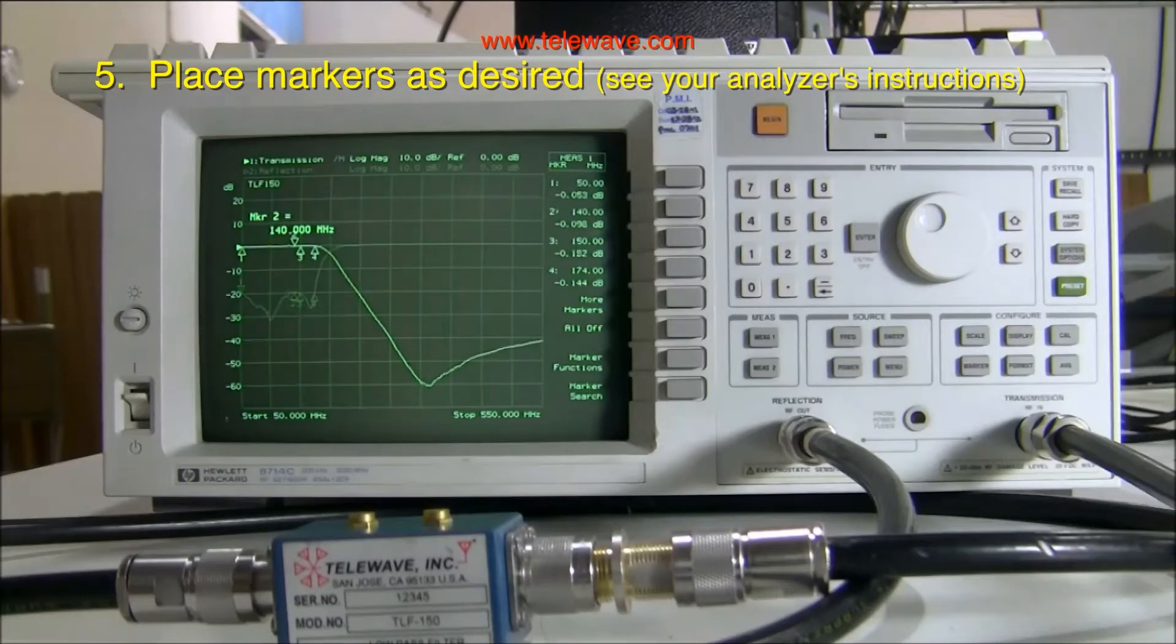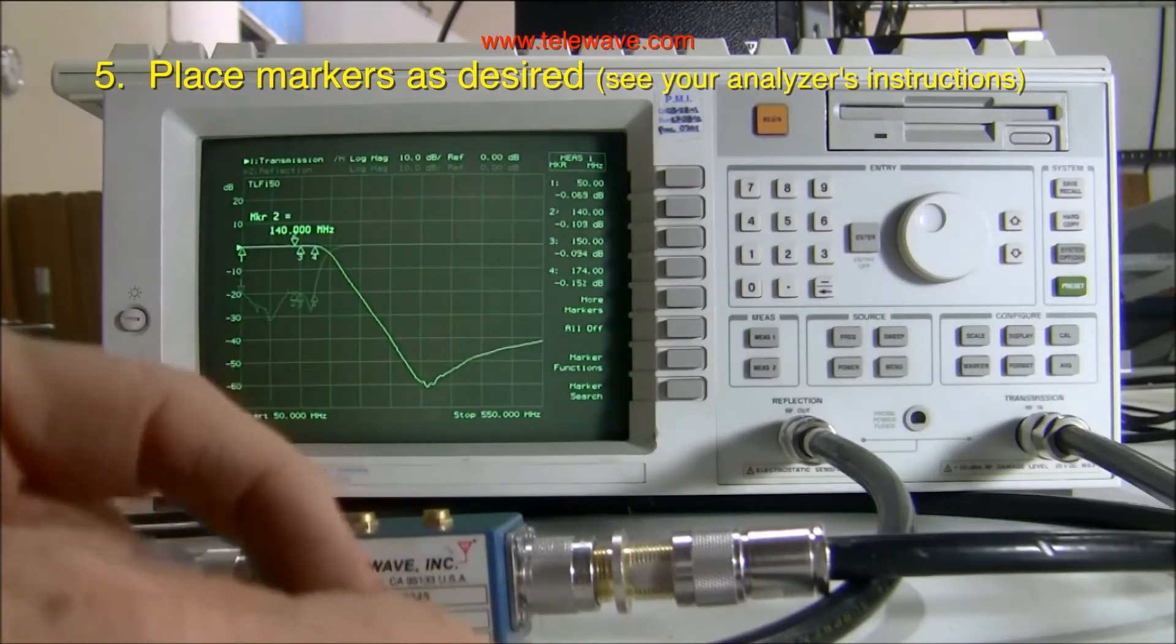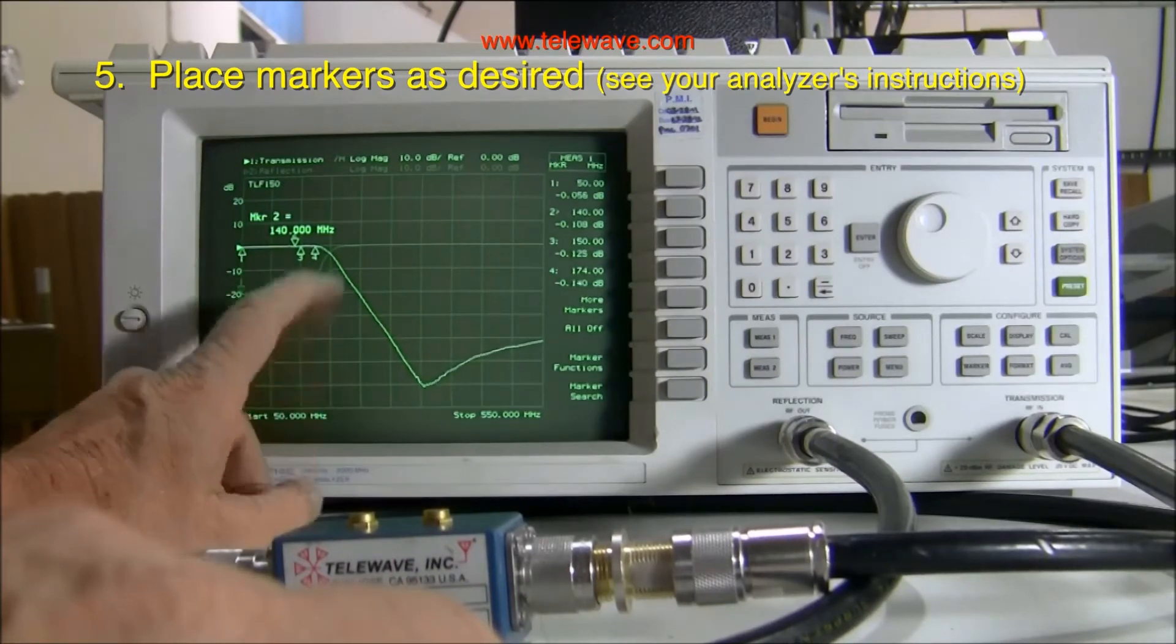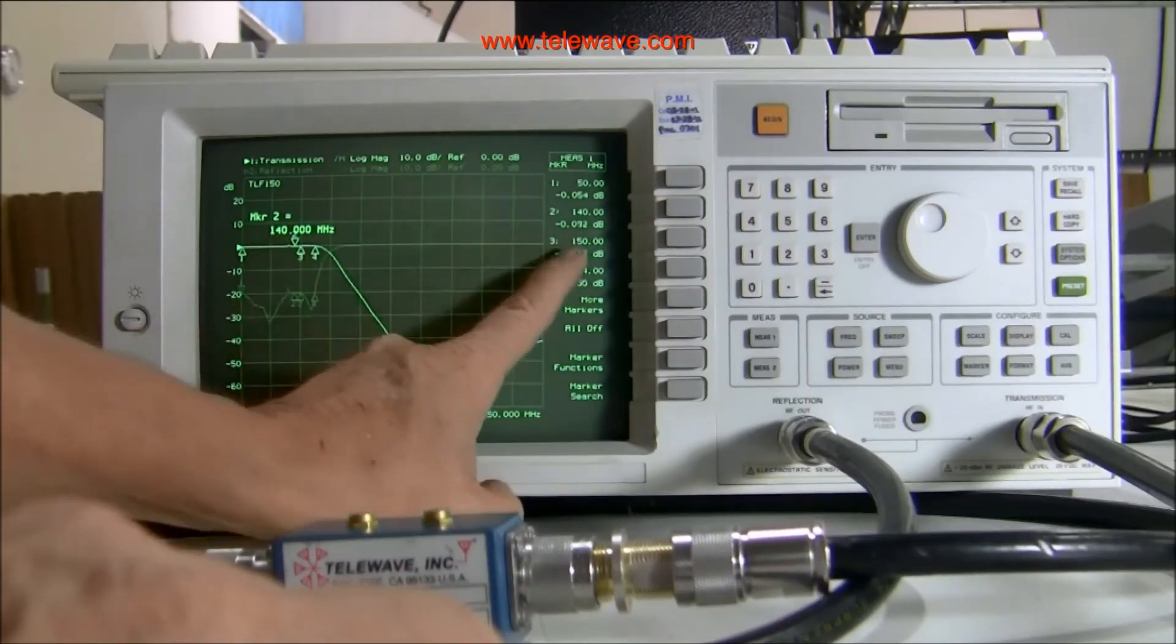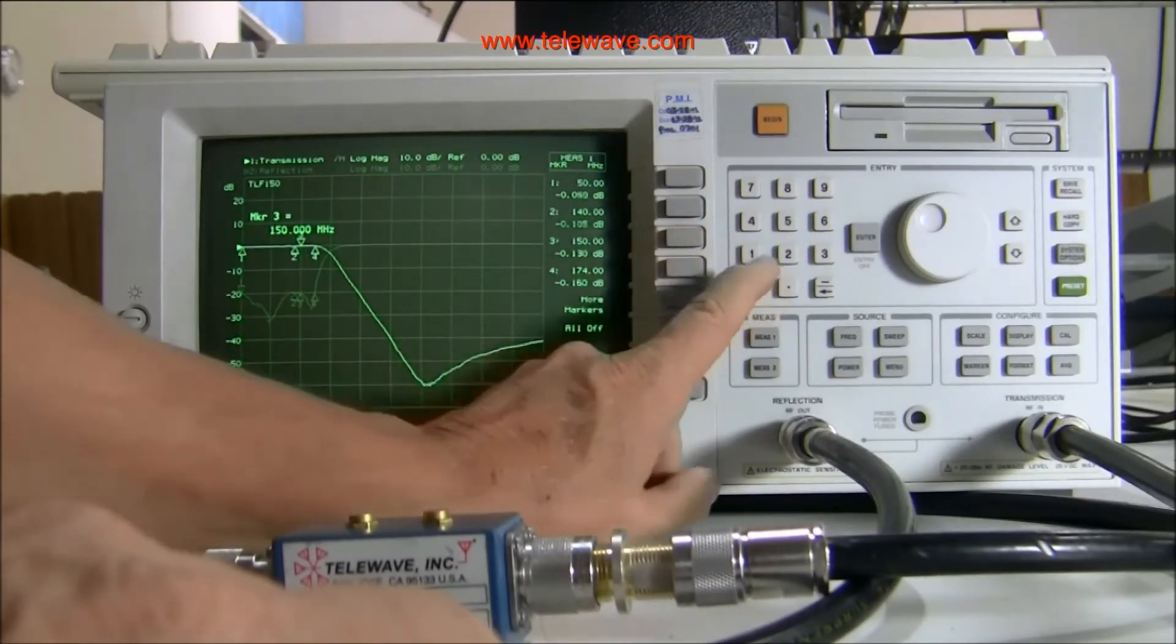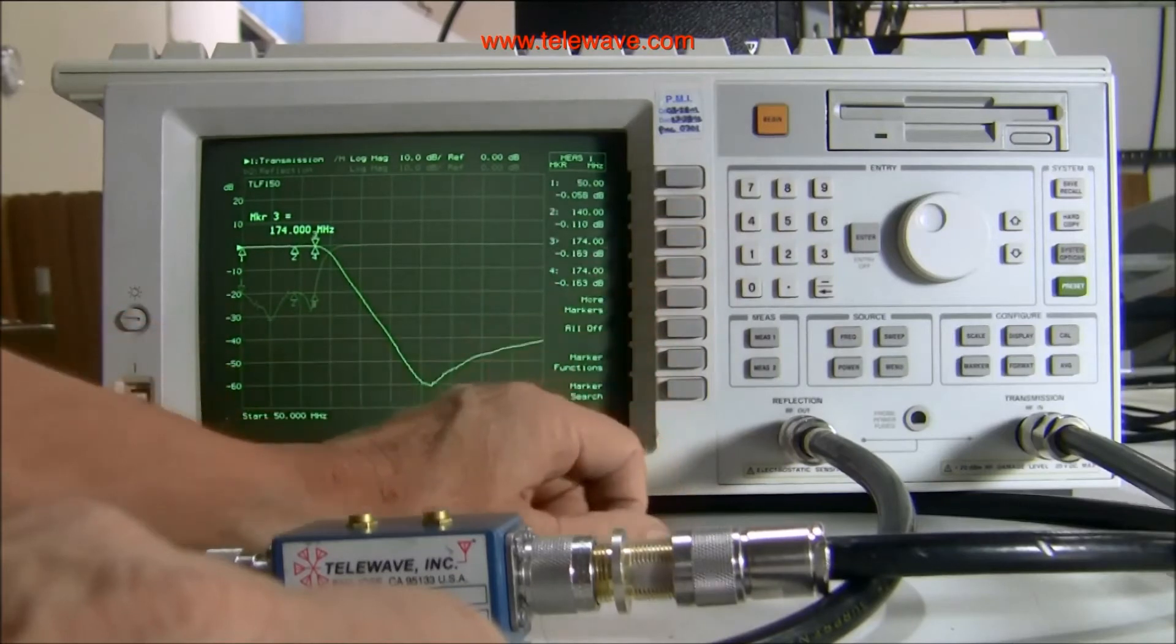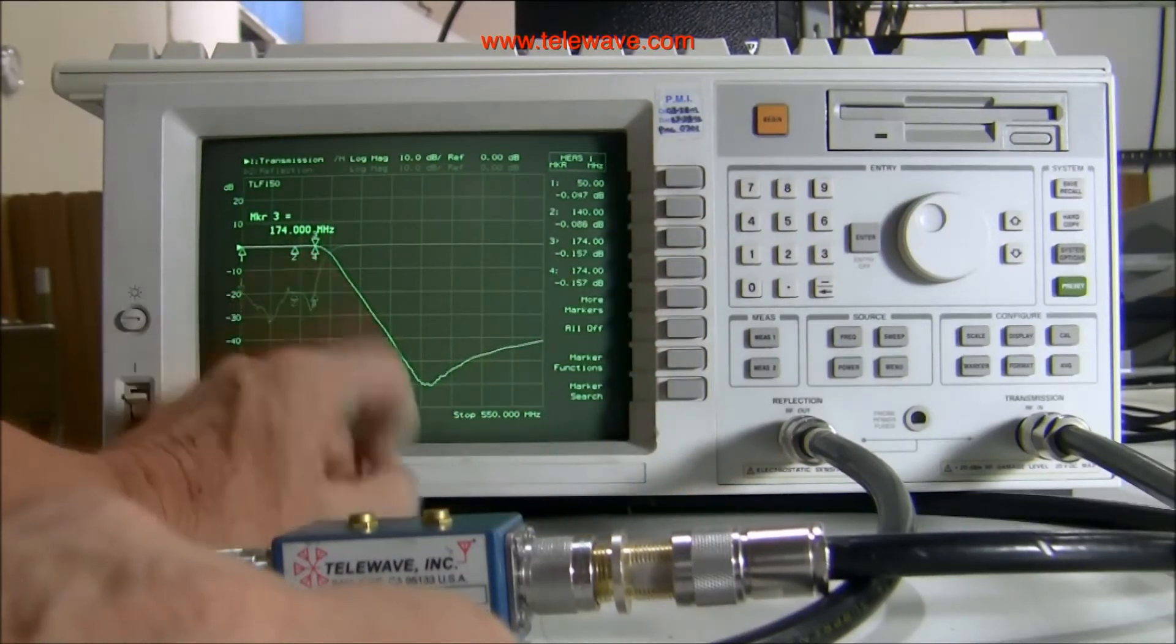I placed a few markers on the screen here. See 50 megahertz over here at number one. Number two is 140 megahertz. That's just below the two meter band. And 150, which is number three, I think I'll change that to 175. Well, 174. Let's put it there to show the corner frequency of this particular filter.